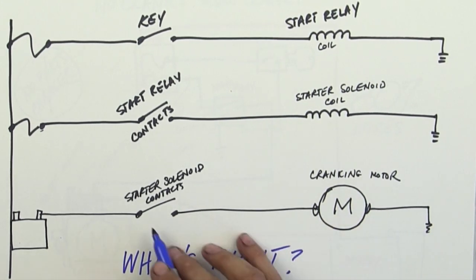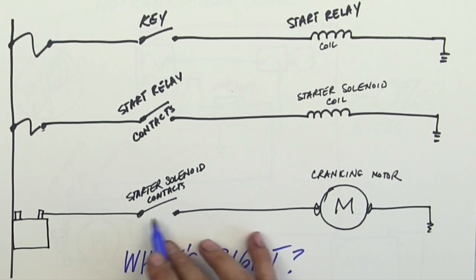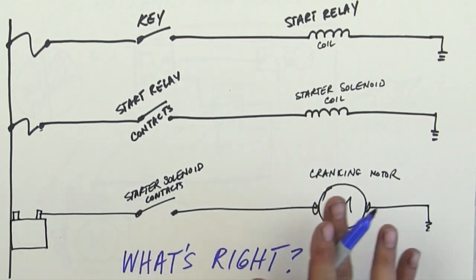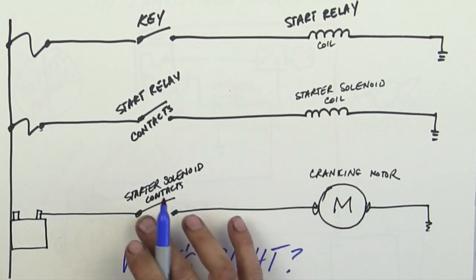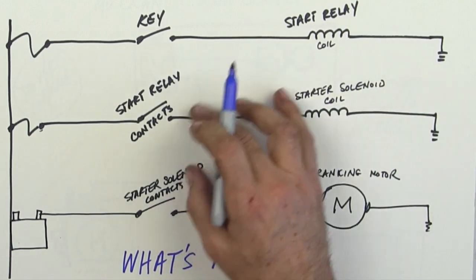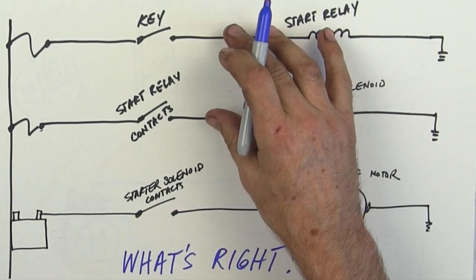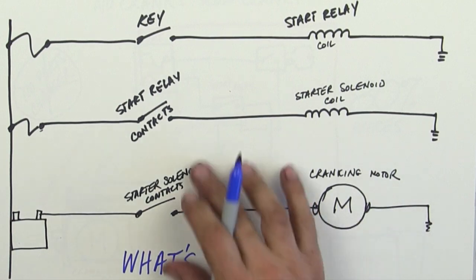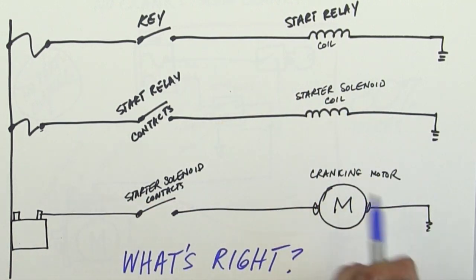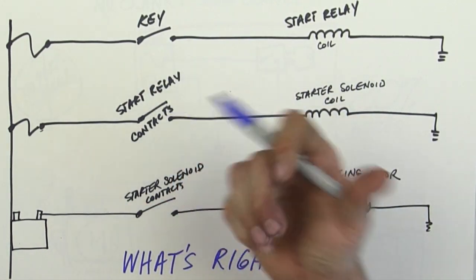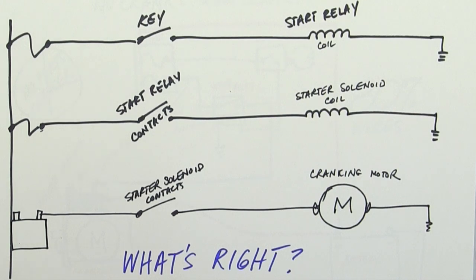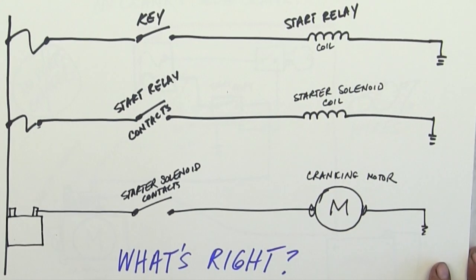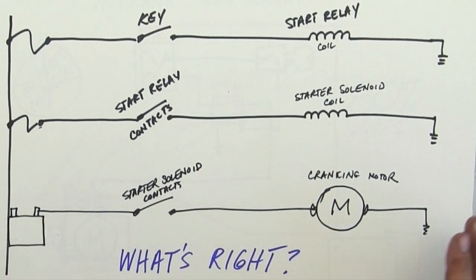So what a lot of people do is they'll come down and they'll use a remote start switch across the starter solenoid contacts. And that's perfectly okay. But then we have to figure out which part of these two circuits are not working, if this one is, and so forth and so on. And the start button is not a problem. That's not wrong. There's nothing really wrong about doing anything in here. Nothing that people have done before is wrong.